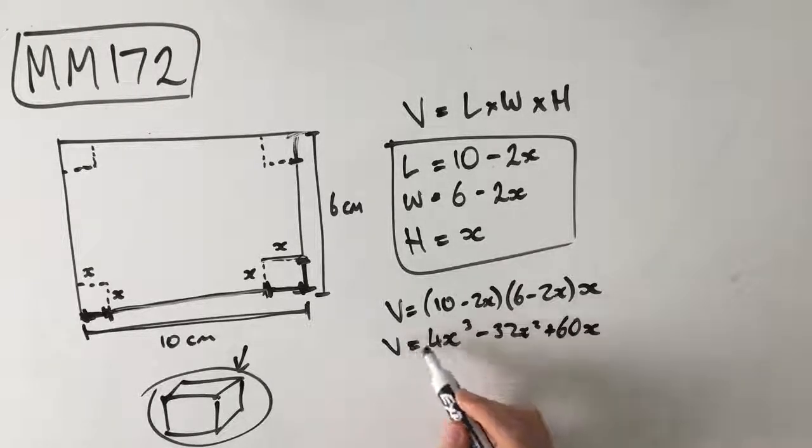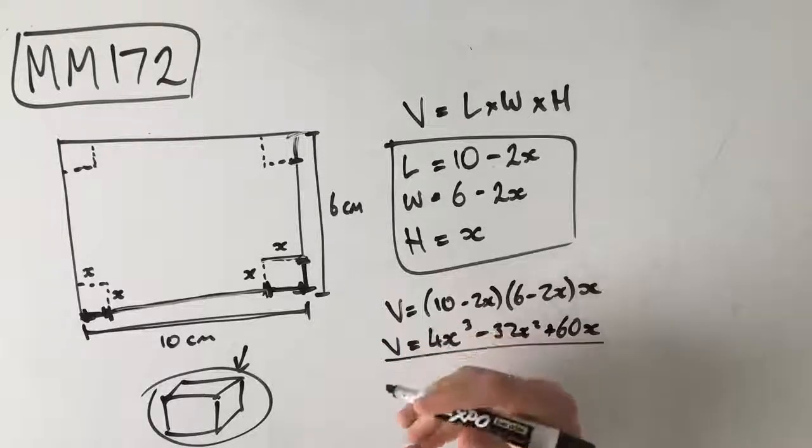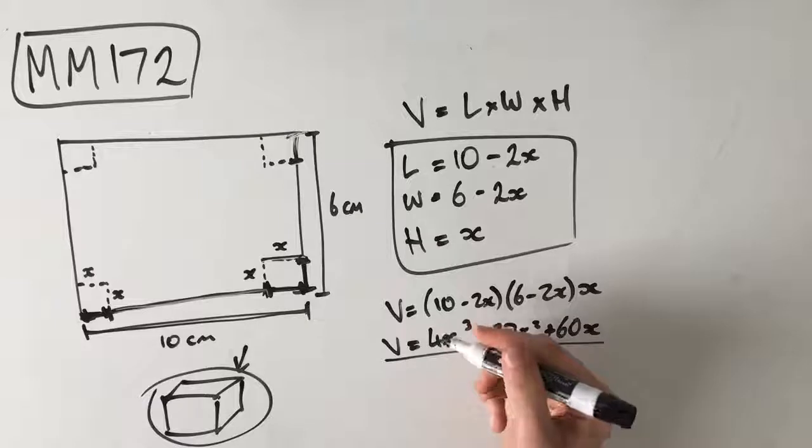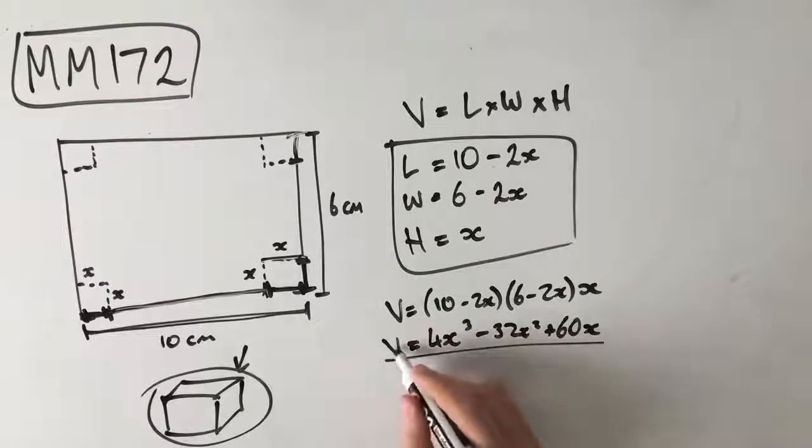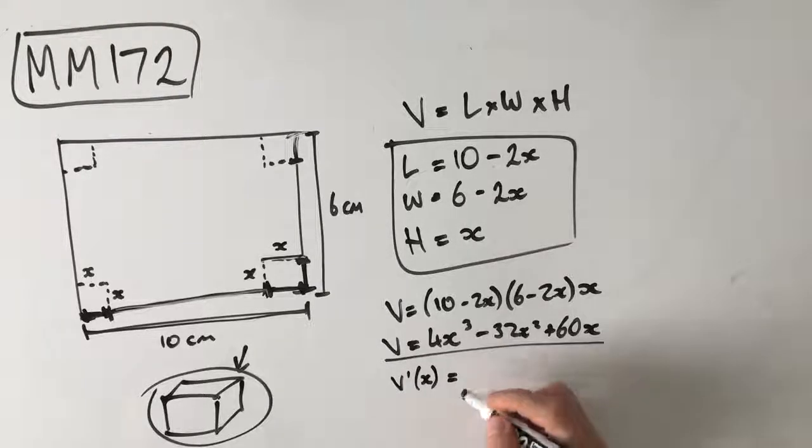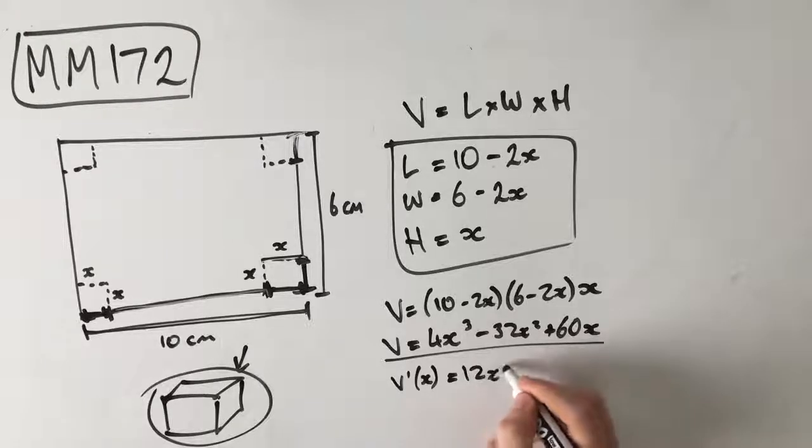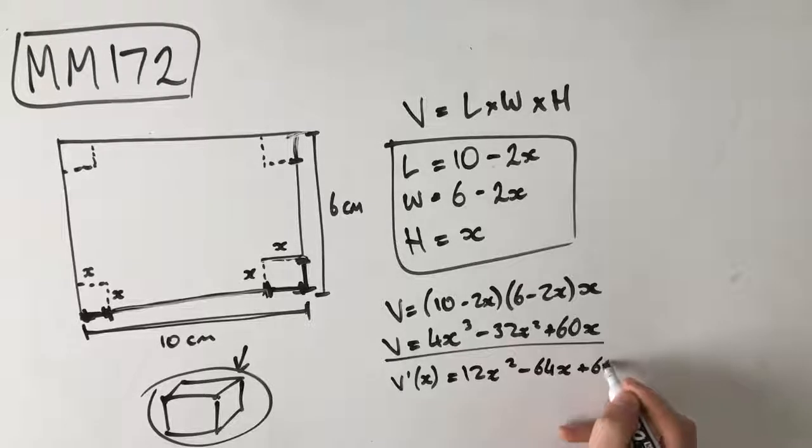And to find where this volume is at a maximum, keeping in mind that a maximum is at a turning point, which means that our gradient is 0, or our derivative function is equal to 0. So this is v of x. So in order to find where our gradient function is 0, we need to find v dash of x. And in this case, it's equal to 12x squared, take 64x, plus 60.